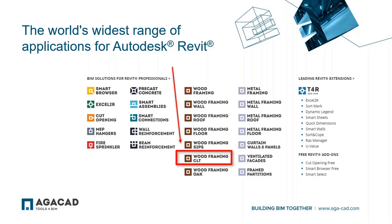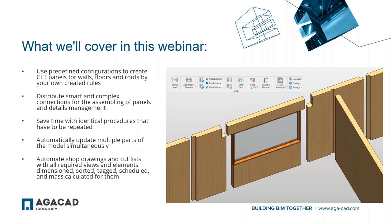Today I'm going to talk about our BIM solution called Wood Framing CLT. It's for creating cross-laminated timber floor, roof slabs, and wall panels of any shape or complexity. In this webinar you'll see how to use predefined configurations to create CLT panels by your own created rules, distribute complex connections, save time with identical procedures that have to be repeated, automatically update the model, and automate shop drawings and cut lists.